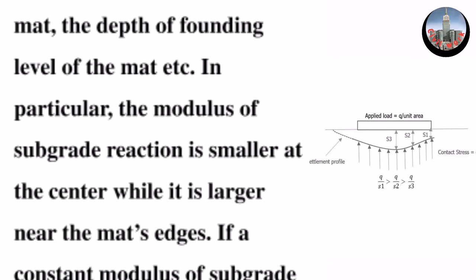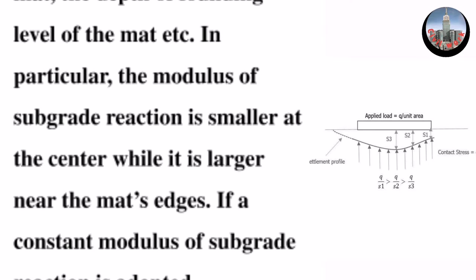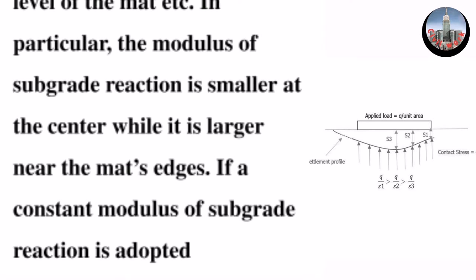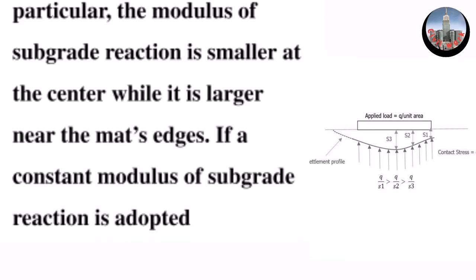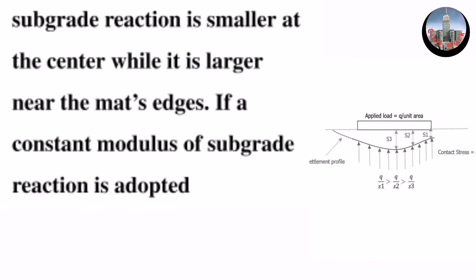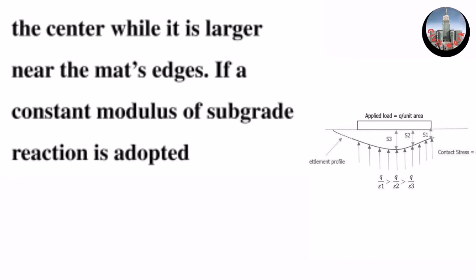In particular, the modulus of subgrade reaction is smaller at the center while it is larger near the mat's edges. If a constant modulus of subgrade reaction is adopted throughout the width of the mat,